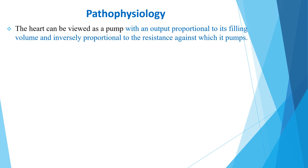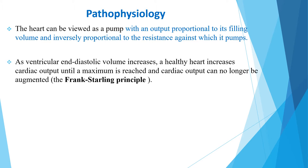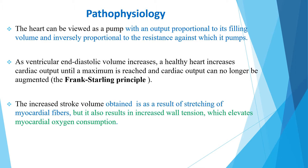When we see the pathophysiology, the heart can be viewed as a pump with output proportional to its filling volume and inversely proportional to the resistance against which it pumps. As ventricular end-diastolic volume increases, a healthy heart increases cardiac output until a maximum is reached. This is called the Frank-Starling principle. The increased stroke volume obtained is a result of stretching of myocardial fibers, but also increases wall tension which elevates myocardial oxygen consumption.